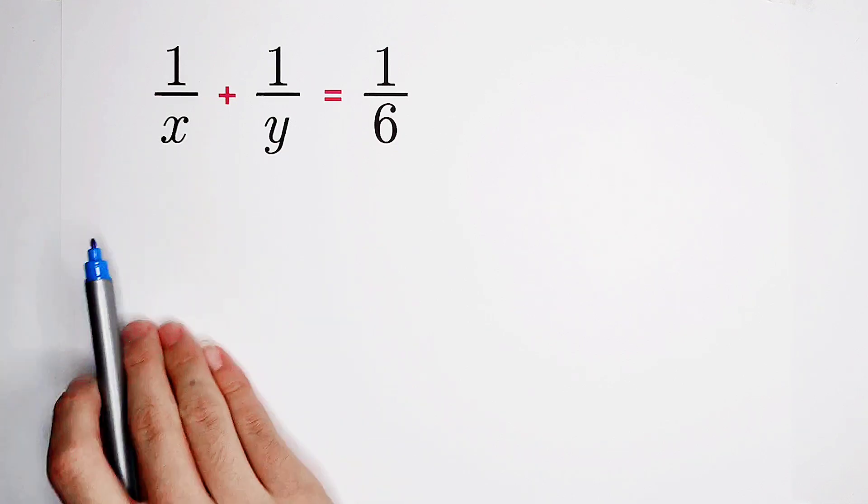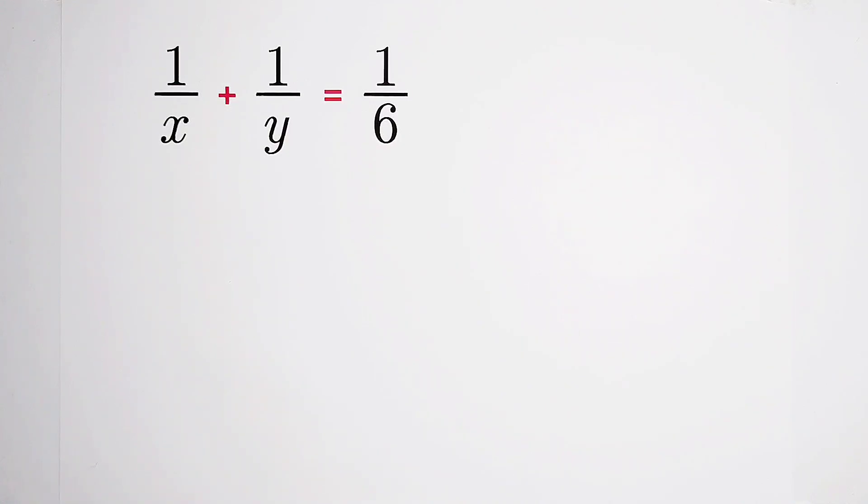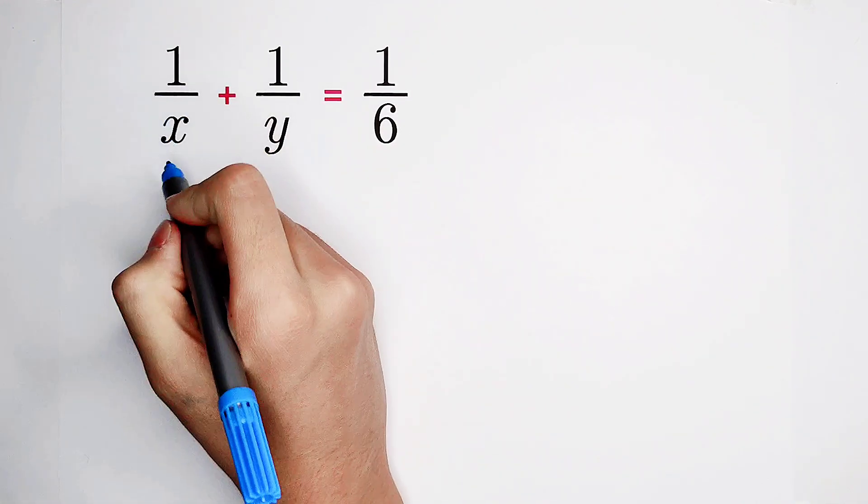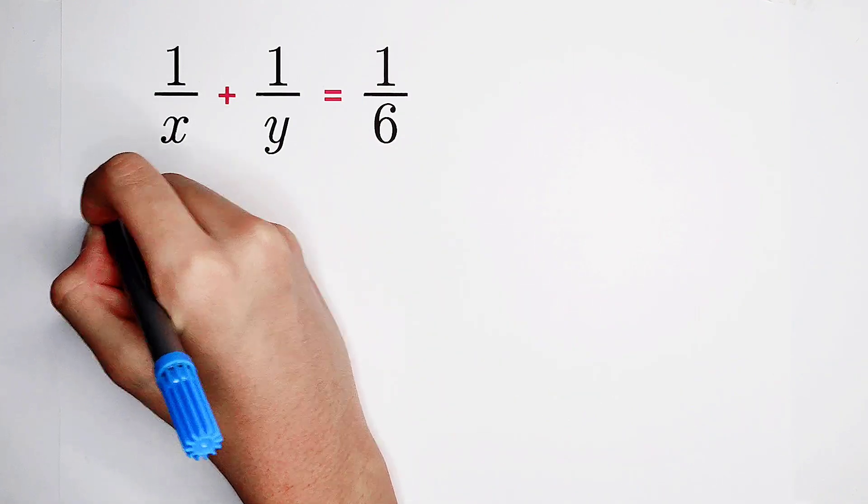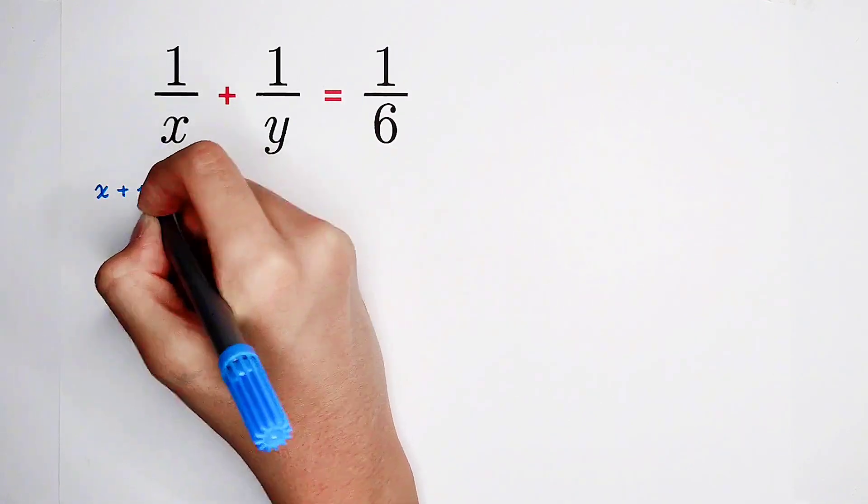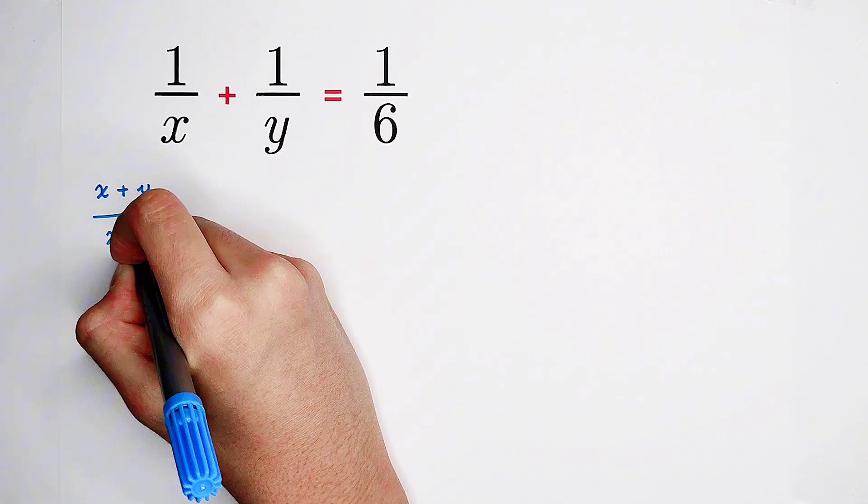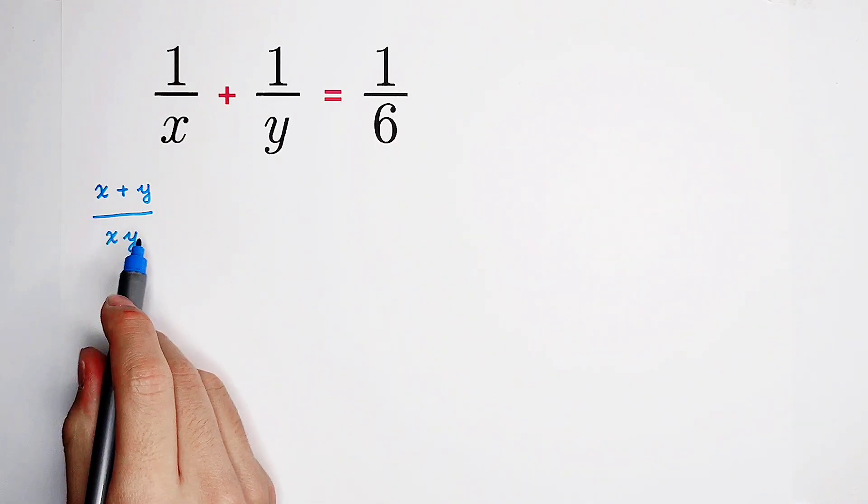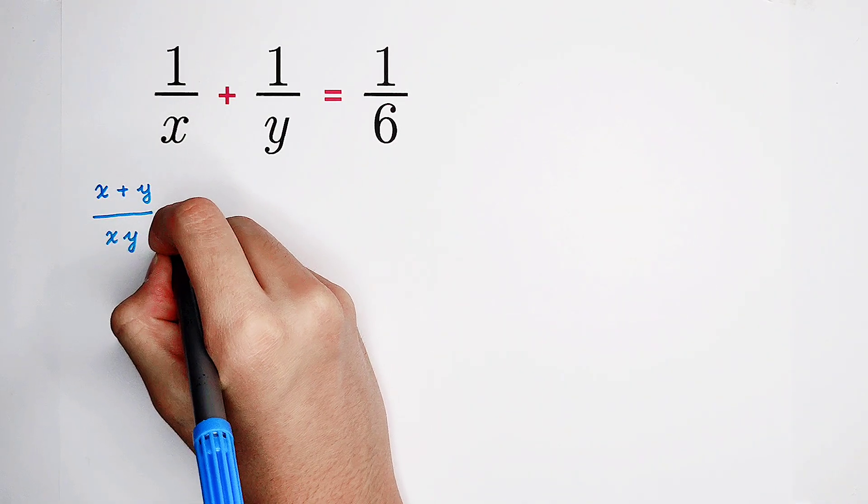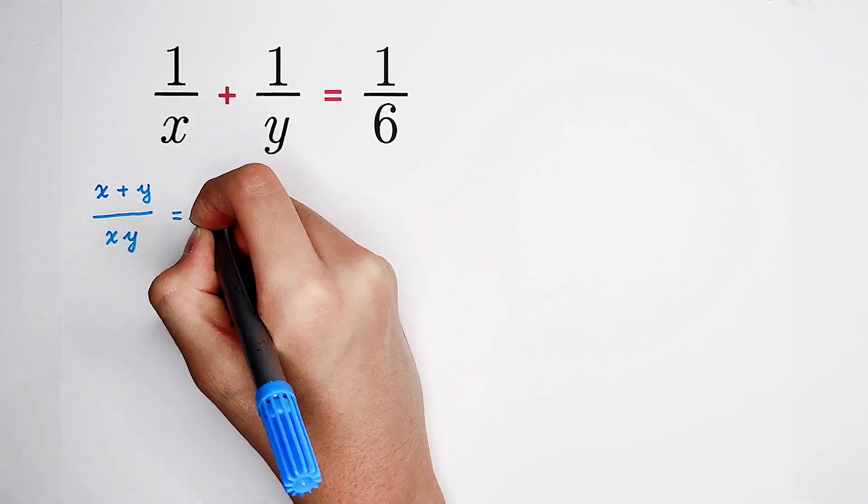How should I simplify 1 over x plus 1 over y? Of course, it is quite easy, isn't it? 1 over x plus 1 over y. It is x plus y over x times y. I'm sorry, I didn't write it so straight. Forgive me, please. And the right-hand side is 1 over 6.